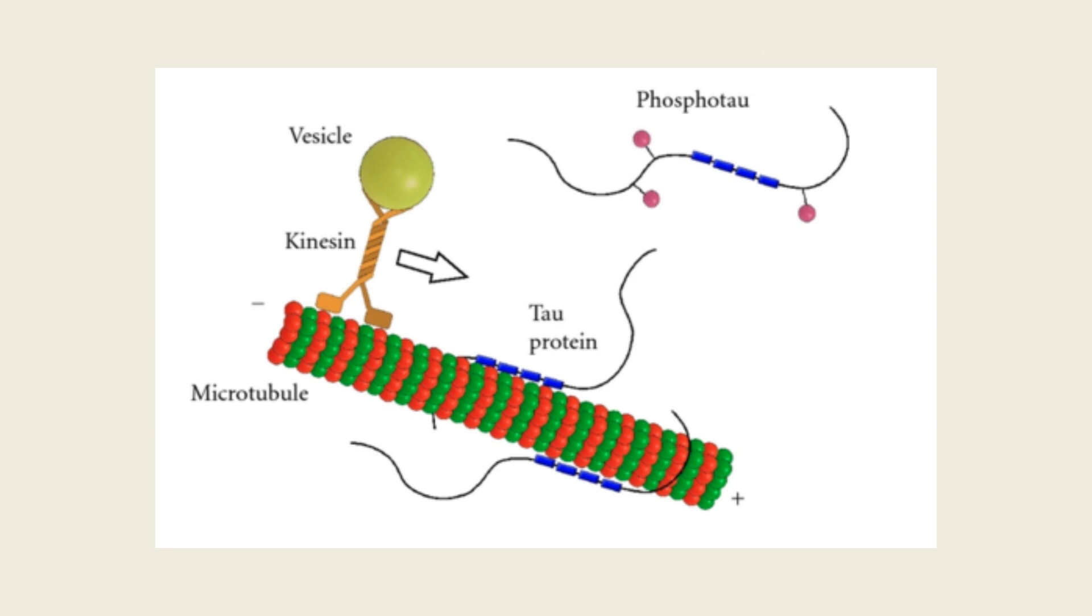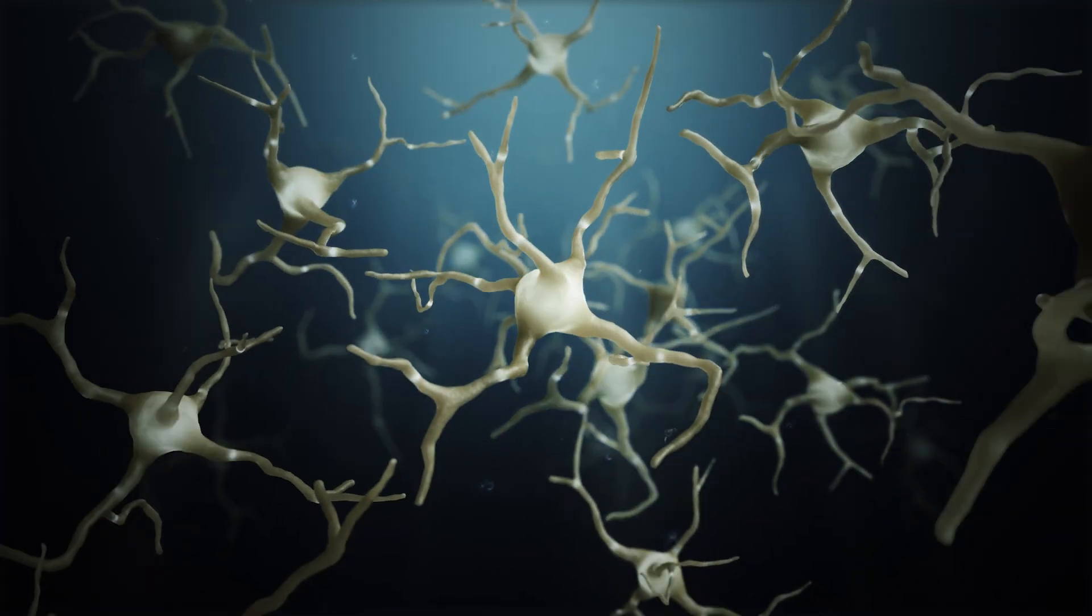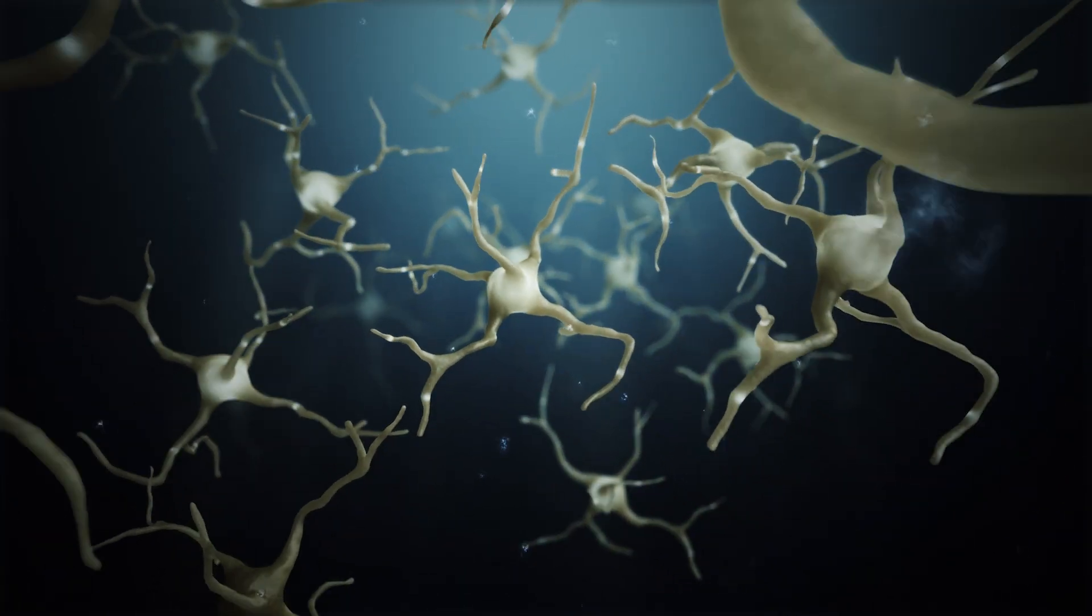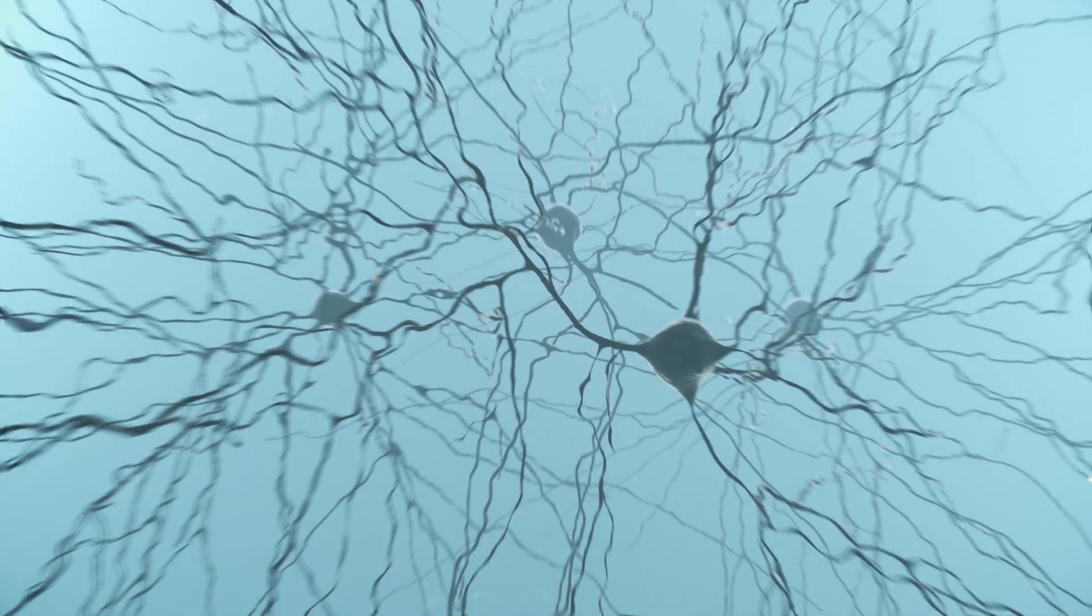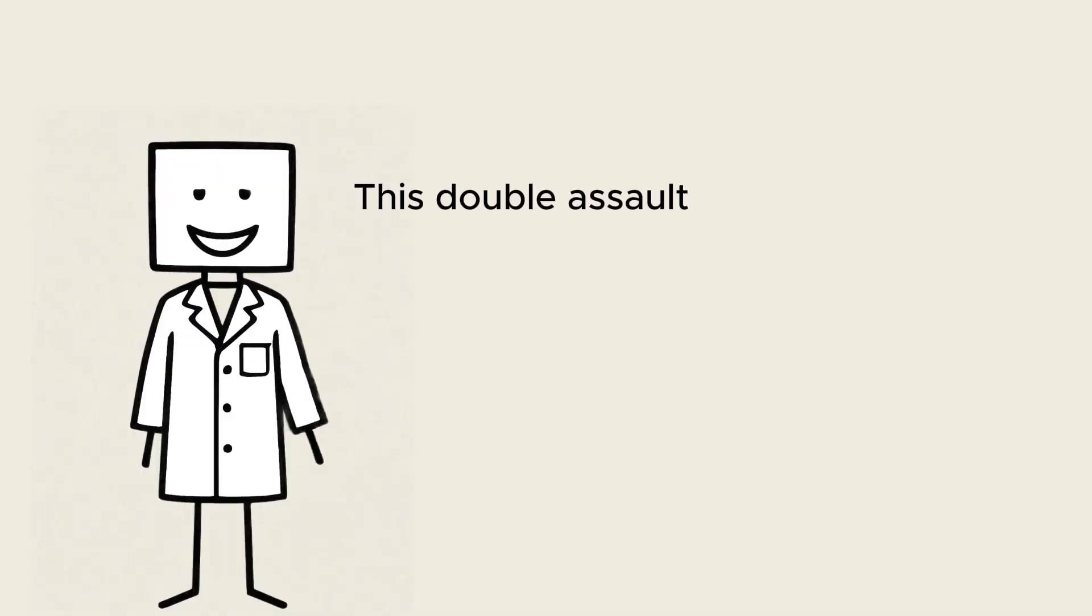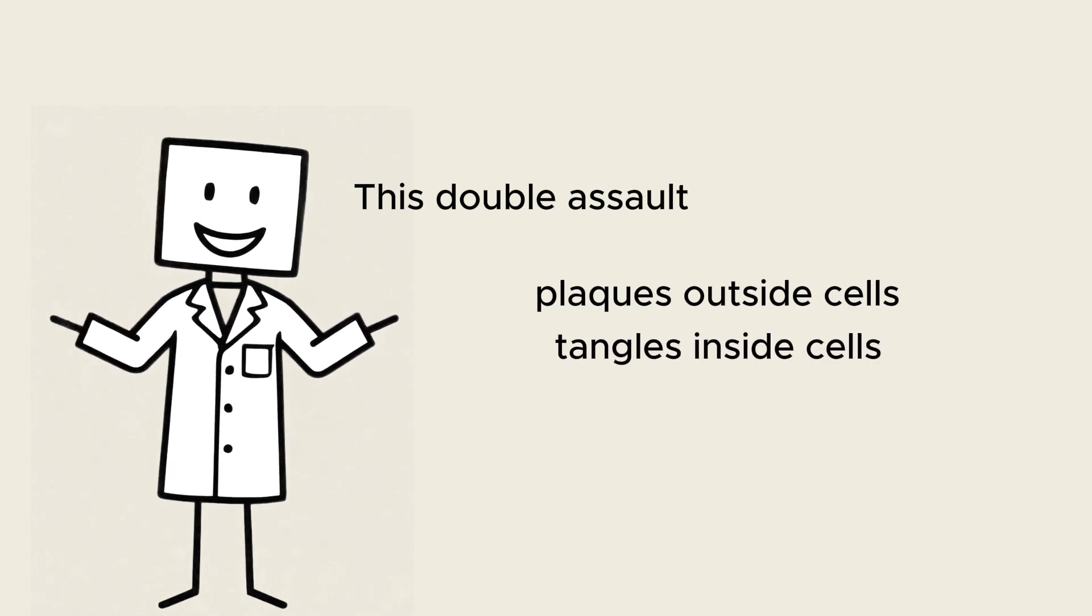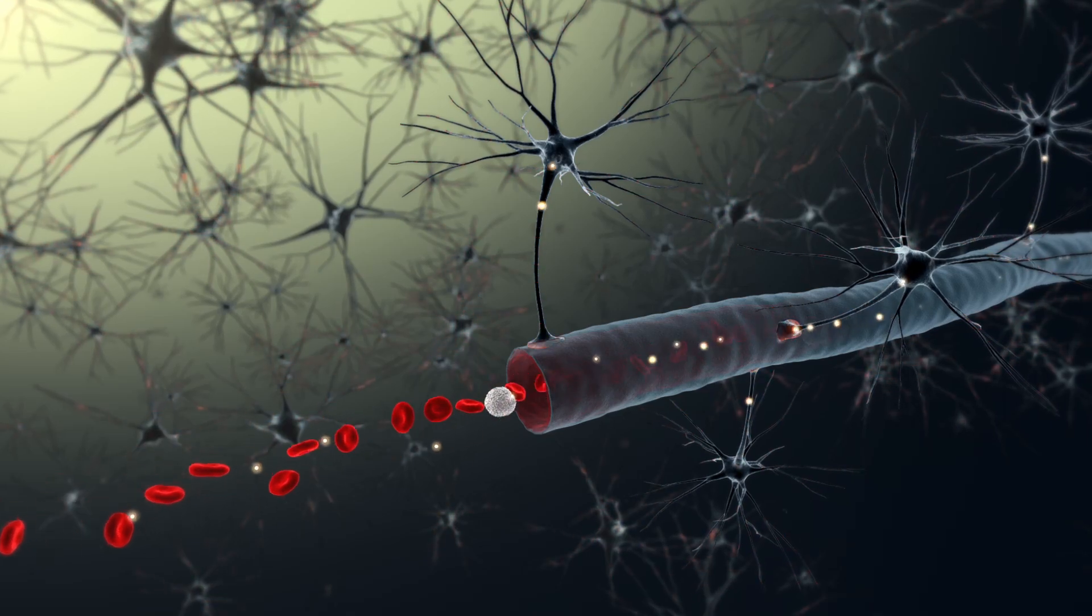Next comes tau, a protein that normally stabilizes microtubules within neurons. When waste removal stalls, tau undergoes hyperphosphorylation, causing it to tangle inside cells. These tau tangles dismantle the internal transport networks of neurons, choking off nutrient and signal flow, ultimately leading to neuronal death. This double assault, plaques outside cells, tangles inside cells, triggers a cascade of neuroinflammation.